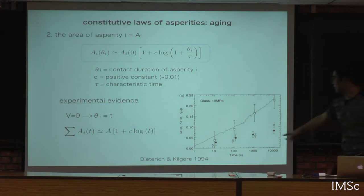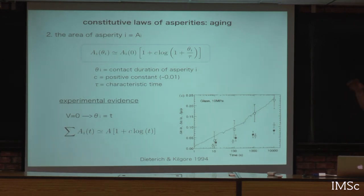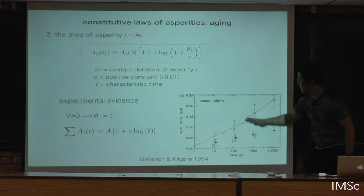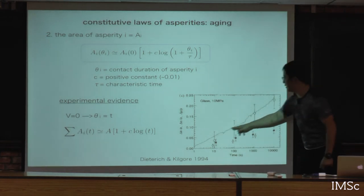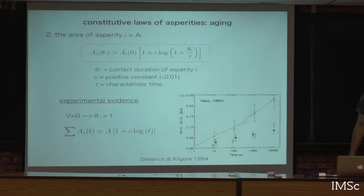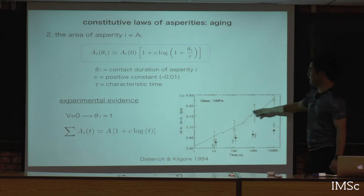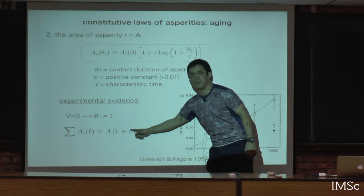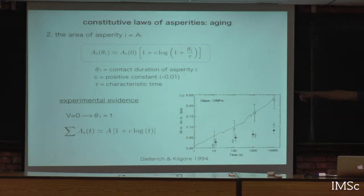The contact area increases logarithmically with elapsed time after two surfaces come into contact. This relation should also depend on temperature — if temperature is high, then this slope is also high, and such temperature dependence is described by constant c.